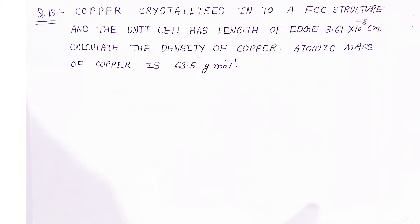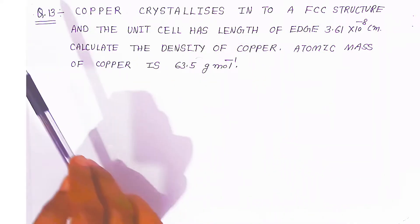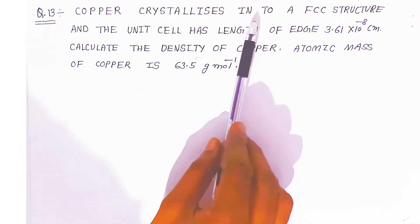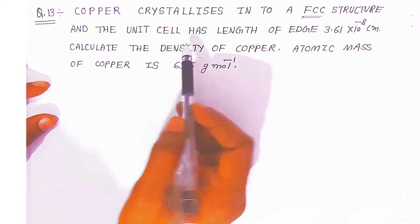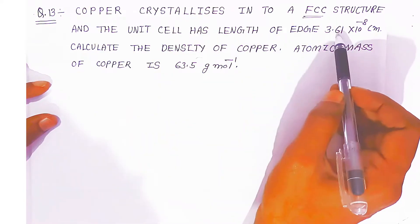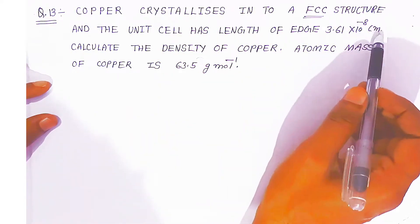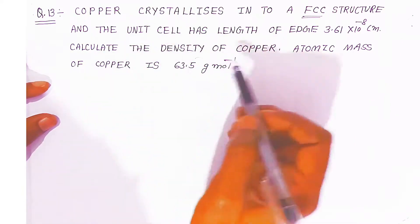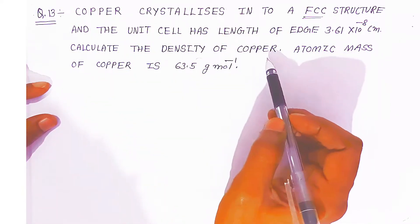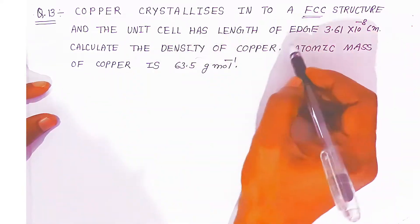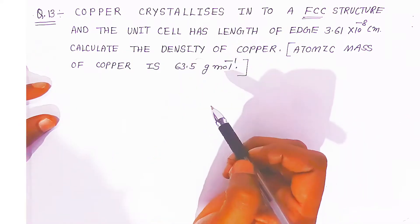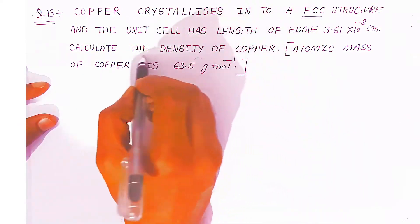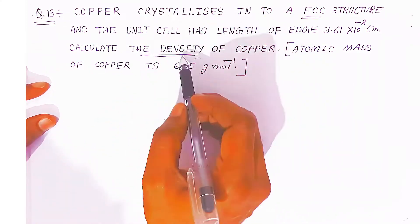Hello students, once again welcome to Bonadatta Academy. Here we are going to solve question number 13: copper crystallizes into an FCC structure. This is very important. The unit cell has the length of 3.61×10⁻⁸ cm. We have to calculate the density of copper. The atomic mass of copper is given as 63.5 gram per mole.